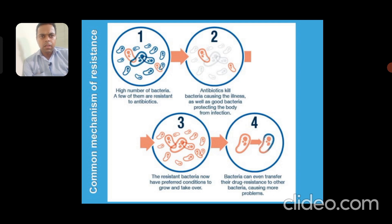In a common scenario, the majority of bacteria are sensitive to antibiotics but a few are resistant. Antibiotics kill the sensitive bacteria, including good bacteria that protect the body from infection, giving resistant bacteria a preferred condition to grow and take over. Bacteria can also transfer their resistance genes to other bacteria, causing more problems.